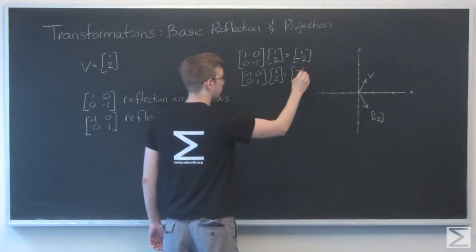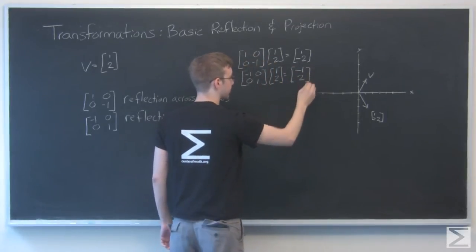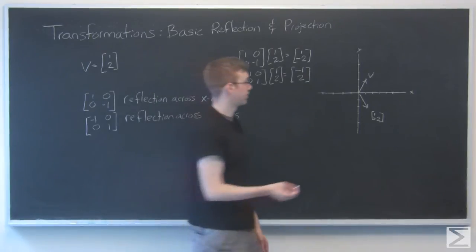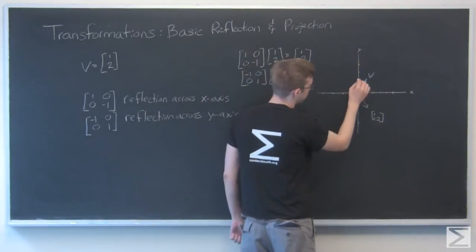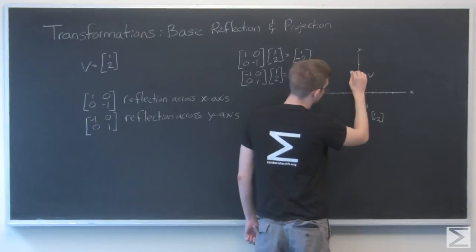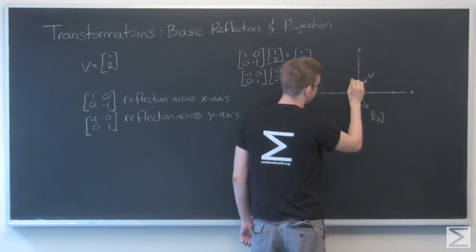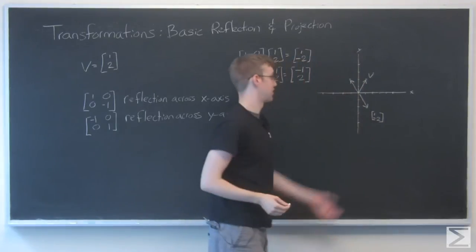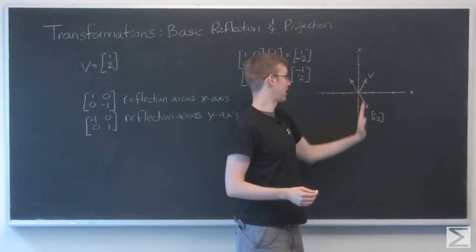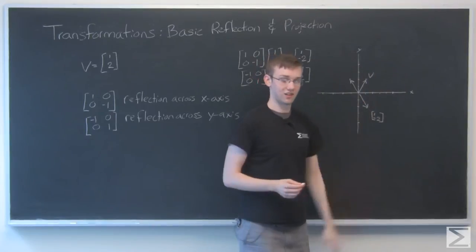And here we get negative 1, 2. So let's chart that. We go negative 1 and up 2. This time we just stuck a mirror there on the y-axis and reflected across that axis.